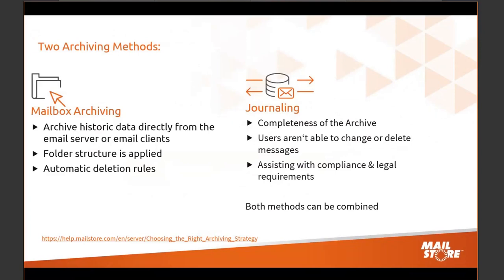There are two archiving methods. For folder structure and load reduction on the email server, mailbox archiving is the answer — all historical emails are archived from individual user mailboxes. If the objective is compliance, journaling is the best method, as all emails are archived before they are delivered to user mailboxes. Both methods can be combined: first archive all historical data via mailbox archiving, then use journaling to ensure all new emails go straight to the archive. This way, only the newest emails remain on the mail server.